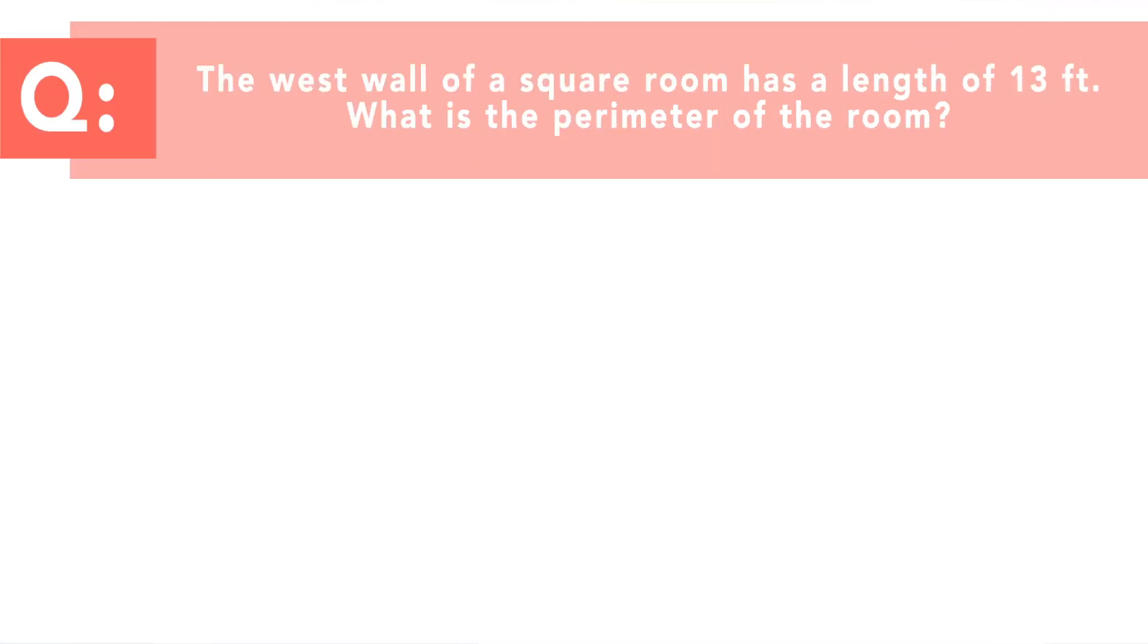The west wall of a square room has a length of 13 feet. What is the perimeter of the room? So the answer options would be 48 feet, 52 feet, 169 feet, or there's just not enough information to know.